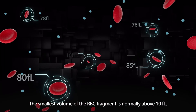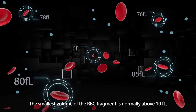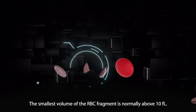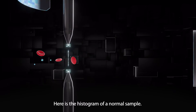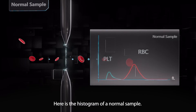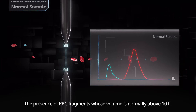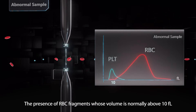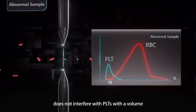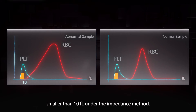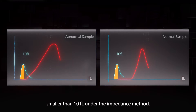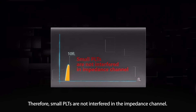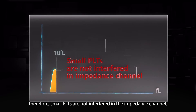The smallest volume of the RBC fragment is normally above 10 femtoliter. Here is the histogram of a normal sample. The presence of RBC fragments, whose volume is normally above 10 femtoliter, does not interfere with PLTs with a volume smaller than 10 femtoliter under the impedance method. Therefore, small PLTs are not interfered with in the impedance channel.